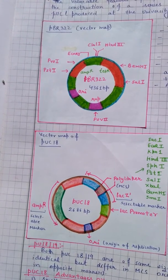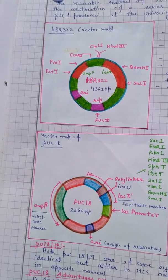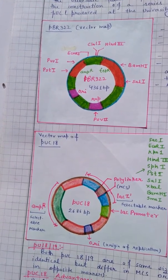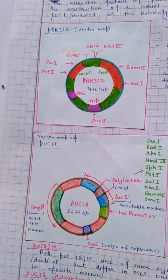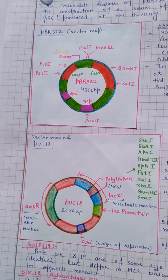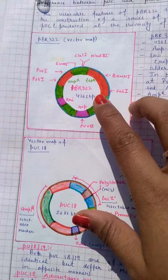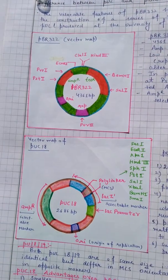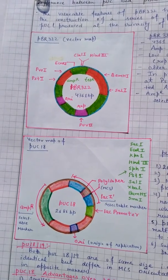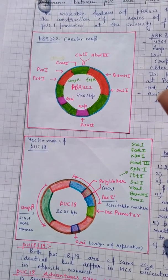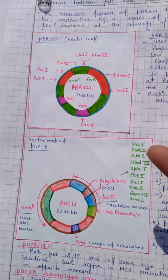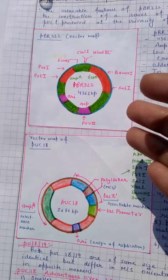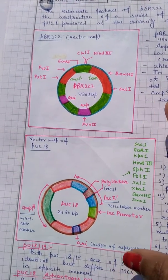Vectors are important vehicles in recombinant DNA technology. There are some important features for a vector. In this diagram you can see two vectors: one is pBR322 and one is pUC18. There are many other vectors also, like pUC19, bacteriophage lambda, M13, Bacterial Artificial Chromosome (BAC), and Yeast Artificial Chromosome (YAC).